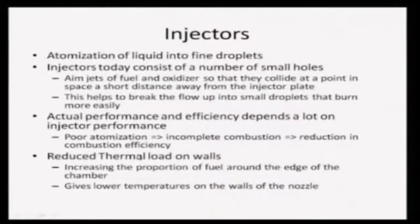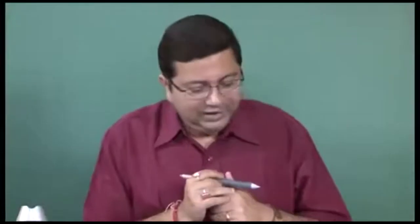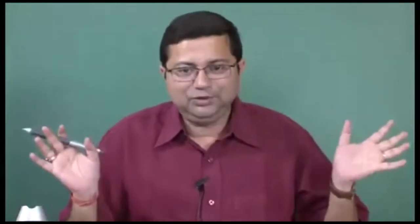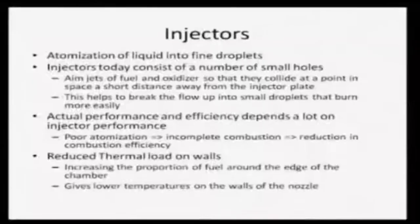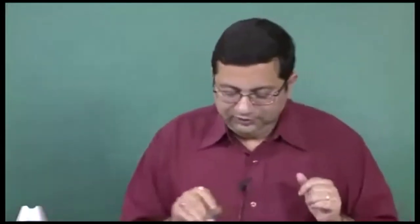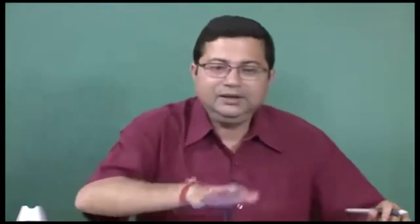Injectors also serve a secondary function of reducing thermal loads on the combustion chamber walls. The injectors spray fuel and oxidizer in such a way that a thin fuel-rich film is created close to the wall. This increased proportion of fuel around the edge of the chamber reduces the wall temperature, preventing melting of the chamber material and reducing heat losses. A particular spatial distribution of the temperature field can be obtained by tailoring the spray pattern.